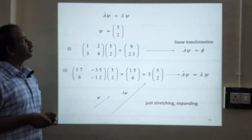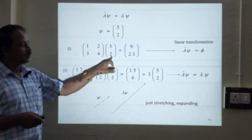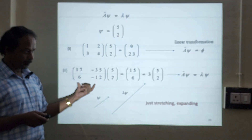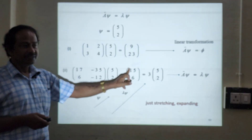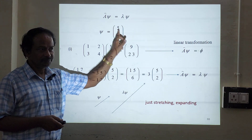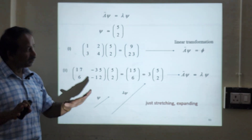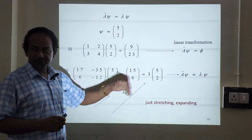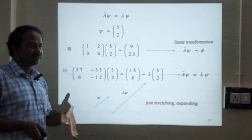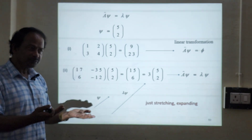Suppose A psi = lambda psi with psi = (5, 2) as a column vector. We apply the matrix operator on (5, 2) and get (15, 6) as a column vector. We can pull 3 out, giving 3 times (5, 2), which is the original vector. So A psi resembles exactly A psi = lambda psi, with eigenvalue 3. This means we have stretched by a factor of three — these are like unit vectors in real space. Not only expansion but contraction also exists.